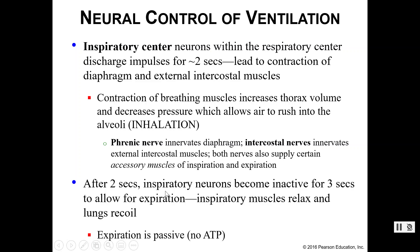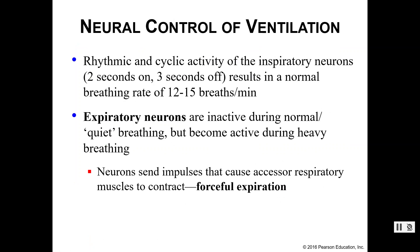After those two seconds, your inspiratory neurons become inactive for three seconds — that's the amount of time needed for expiration. During those three seconds, your inspiratory muscles relax and your lungs recoil; this is mostly a passive process, not requiring any ATP. Then the cycle repeats: two seconds of firing, three seconds of inactivation, two more seconds of firing, three more seconds of relaxation. This is where we get the 12 to 15 breaths per minute — two seconds on, three seconds off, about five seconds total.